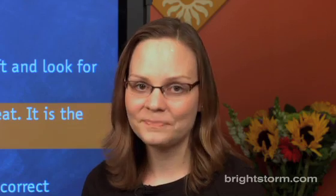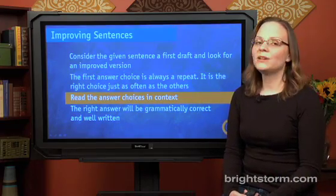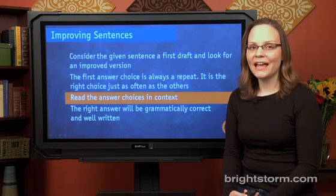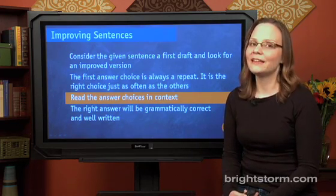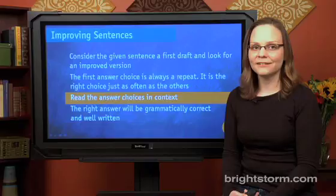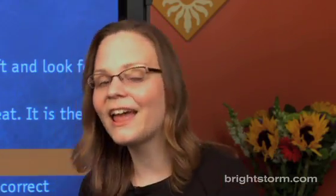One nice thing about that is if you read the original sentence and can tell it's wrong, you can automatically eliminate answer choice A and keep zooming through the answer choices — saving time. Also, it's important to read the answer choices in context. A lot of times students just look at the underlined part and the answer choices replacing it, and if something sounds fine, they assume they've found the right answer. But sometimes a change fixes the underlined part and then breaks a different part of the sentence. So before choosing an answer, plug it in, read it in context, and see if the whole sentence sounds fine.